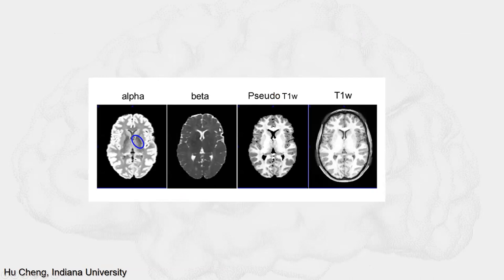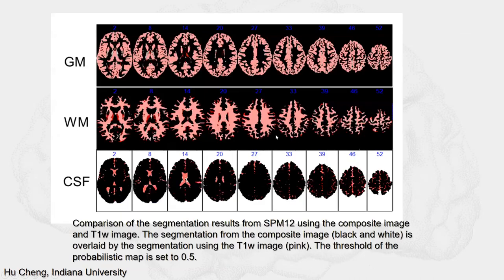This figure shows that the pseudo T1-weighted image is very similar to the T1-weighted image. Here is a comparison of the segmentation results from SPM12 using the T1-weighted image and the pseudo T1-weighted image. The segmentation from the composite image is shown in black and white and overlaid by the segmentation using the T1-weighted image in pink. The threshold of the probabilistic map is set to 0.5. The overlap between the two segmentations is very good — a very large overlap, with only small discrepancies shown as pure white or red.